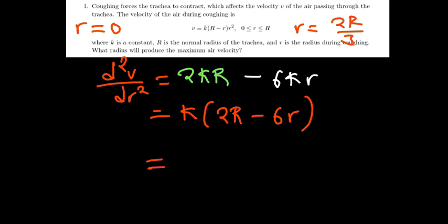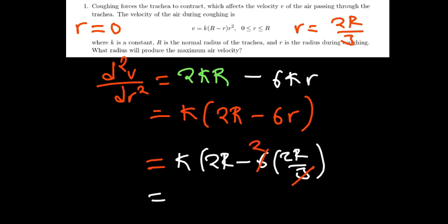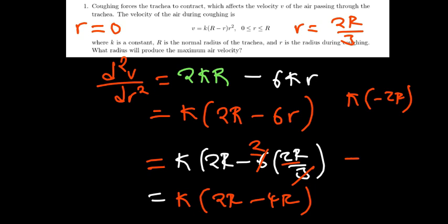If you try the other value, 2R/3, substituting that where r is, that's going to be 6 times 2R/3. You end up with k times (2R minus 4R), which is k multiplied by negative 2R, which is basically negative 2kR, which is clearly negative. So that becomes a maxima.